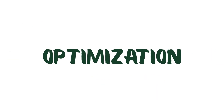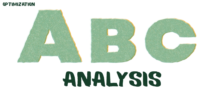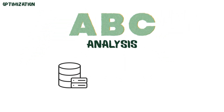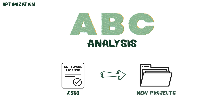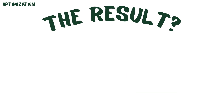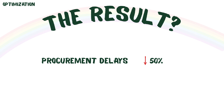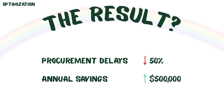Optimization: ABC analysis prioritizes servers for maintenance and reallocates 500 licenses to new projects. The result? Complete visibility reduces procurement delays by 50%, saves $500,000 annually, and ensures compliance during audits.